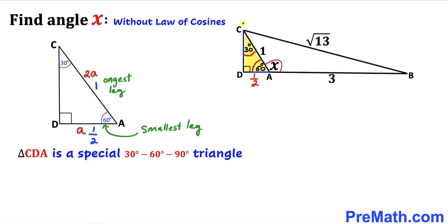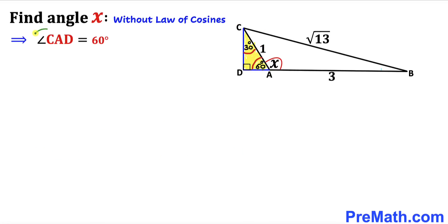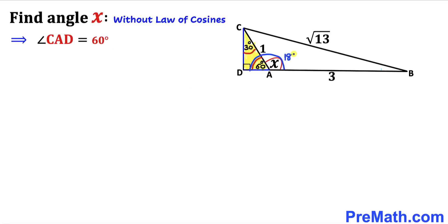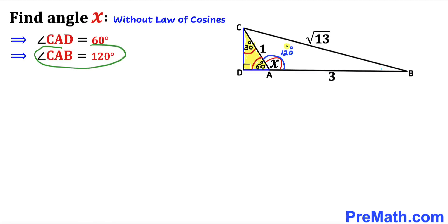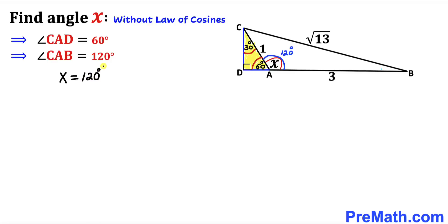And angle DCA is 30°. So angle CAD is 60°. Now we know that this straight angle is 180°, and this angle is 60°, so therefore the supplementary angle becomes 120°. Thus angle CAB turns out to be 120°. And angle CAB is just our angle x, so we conclude that angle x is 120°.